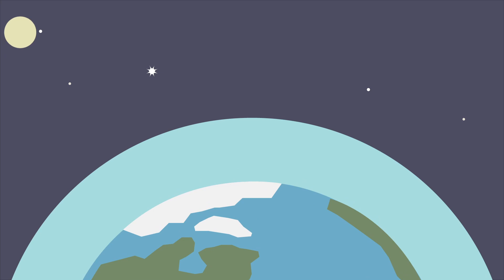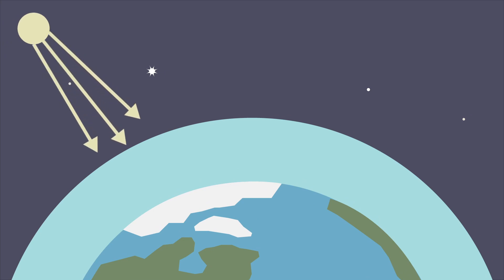In the daytime, the sun shines through the atmosphere, warming Earth's surface. After the sun goes down, Earth's surface cools. This releases heat back into the air.